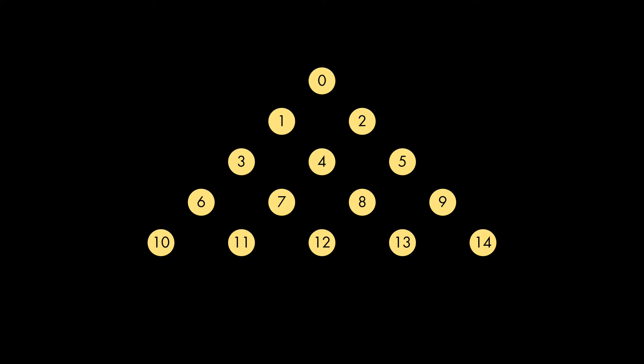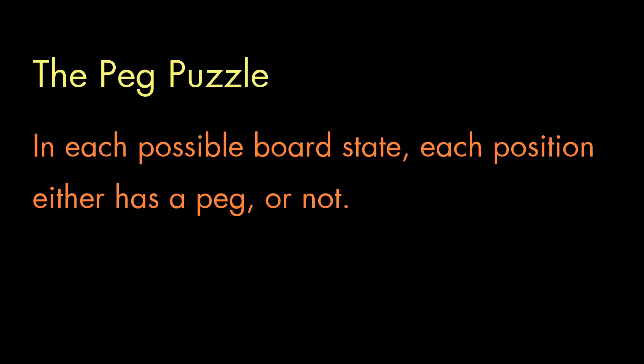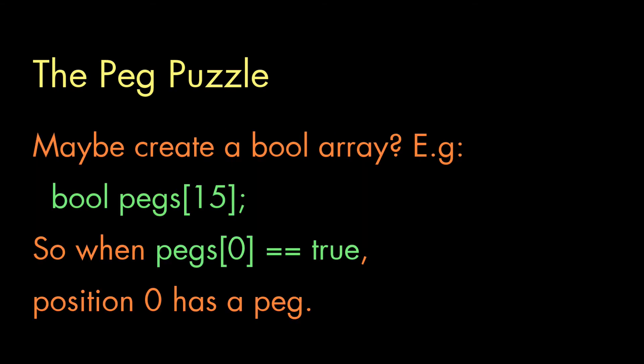In the first question, I decided that I would number the positions 0 through 14, like this. For each position, I just needed to know, does it currently hold a peg or not? My first thought was I could use an array of 15 boolean values. So, element 0 in the array would be true if there was a peg in position 0 on the board. But here's the thing.